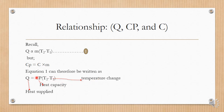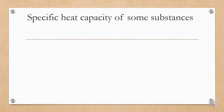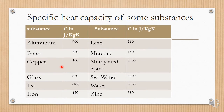Experimentally, the specific heat capacities of various substances have been determined. From the table: aluminium has 900 joules per kilogram per Kelvin, and lead has 130 joules per kilogram per Kelvin. These values will be needed in our calculations.